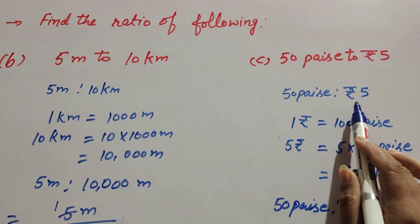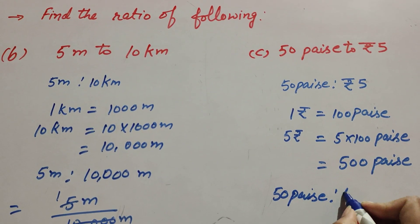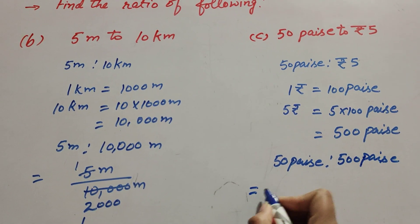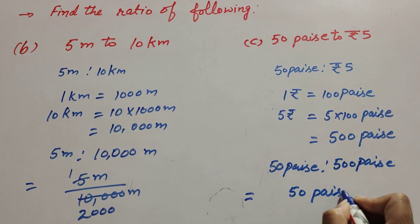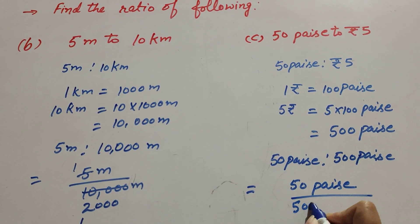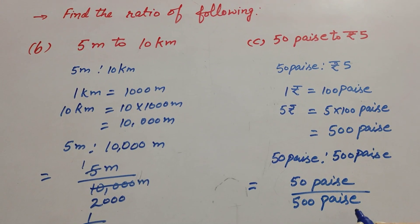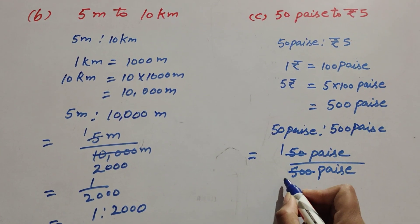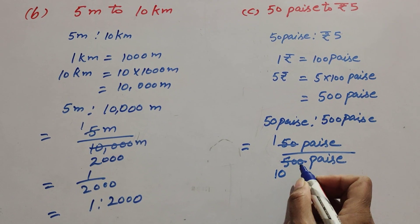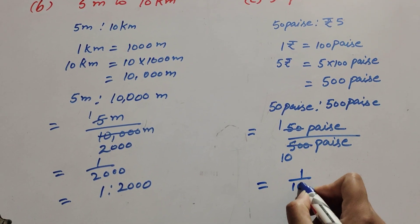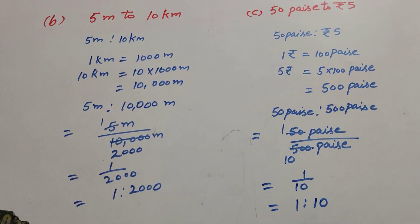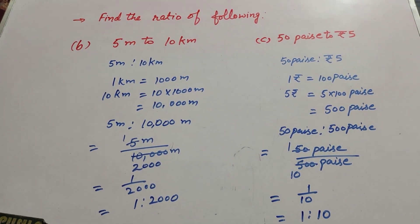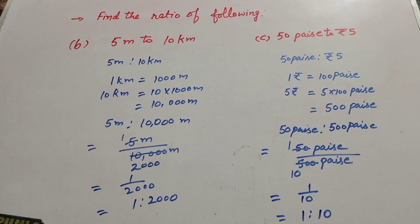So the ratio is 50 paisa to 500 paisa. Since 50 and 500 are both divisible by 50, we cancel them — 50 ones are 50, 50 tens are 500 — so it equals 1 over 10. The ratio is 1:10. Thanks for watching — like, comment, and share my video, and subscribe to my YouTube channel. Thank you.